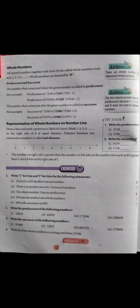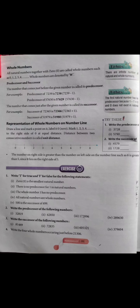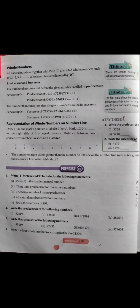On the number line, numbers on the right side are greater. For example, 7 is to the right of 4, which means 7 is greater than 4. Isi tarike se hum numbers ko number line par represent karte hain. Simple way mein pehle ek line draw karo, usse 0 se mark karo, aur equal distance mein points mark karo.